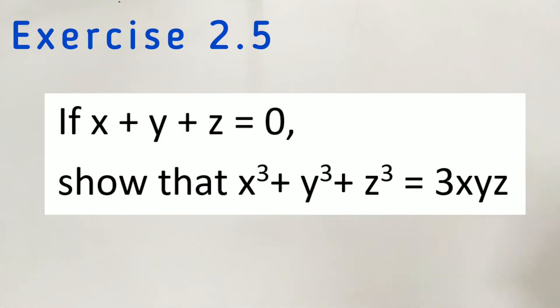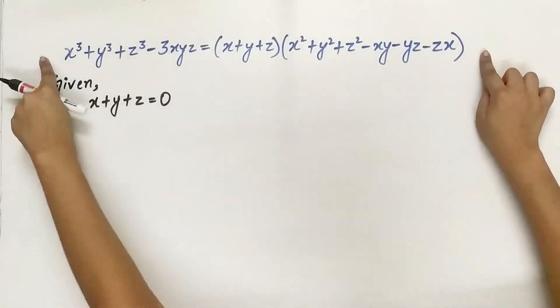show that x cubed plus y cubed plus z cubed is equal to 3xyz. Remember the identity?